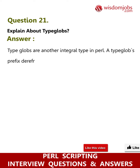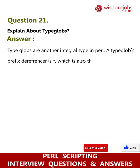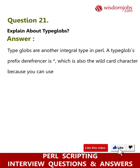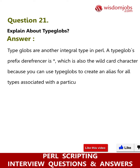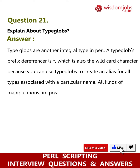Question 21: Explain about type globs. Answer: Type globs are another integral type in Perl. A type glob's prefix dereferencer is asterisk (*), which is also the wildcard character. You can use type globs to create an alias for all types associated with a particular name. All kinds of manipulations are possible with type globs.